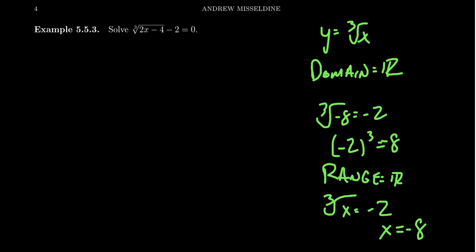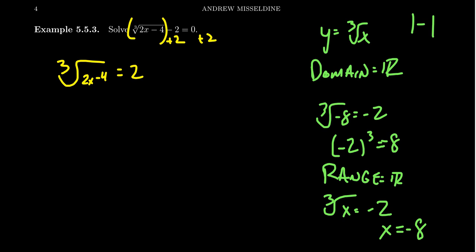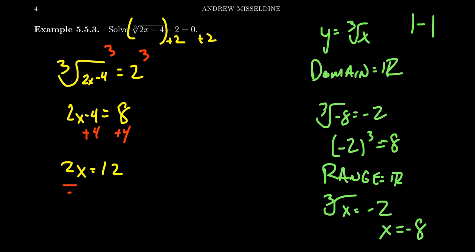The cube root of x is a one-to-one function, so it's truly invertible. To solve this equation, you just undo operations in reverse order. First, add two to both sides to get the cube root of 2x minus four equals two. To get rid of the cube root, do its inverse operation — cube both sides — and you end up with 2x minus four equals eight. Add four to both sides to get 2x equals 12, then divide by two: x equals six.